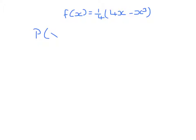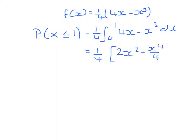Probability that x is less than or equal to 1 will be the integral from 0 to 1 of 1 quarter upon 4x minus x cubed dx. So that's 1 quarter times 2x squared minus x to the 4 over 4 from 0 to 1. So 1 quarter times 2, take away 1 quarter. 1 quarter times 7 over 4, 7 sixteenths.